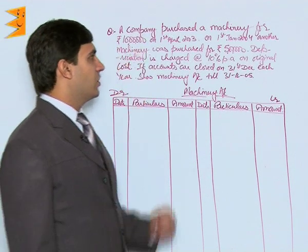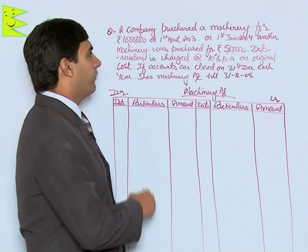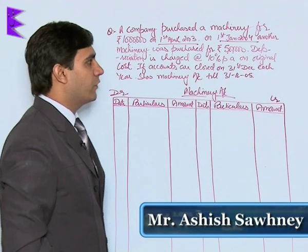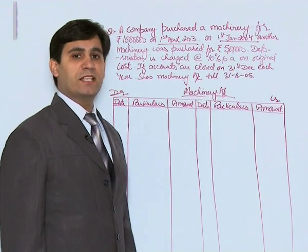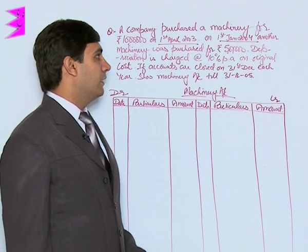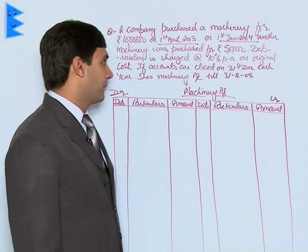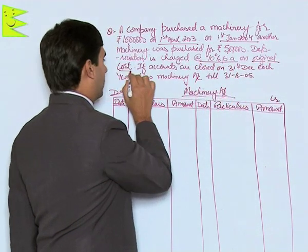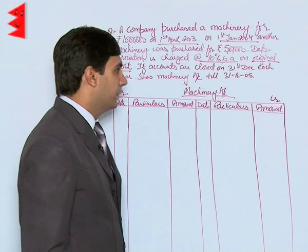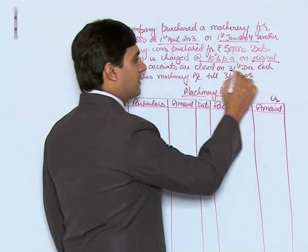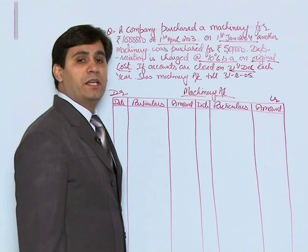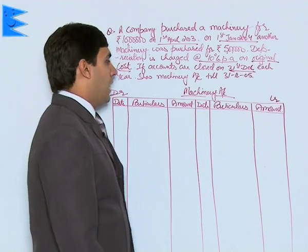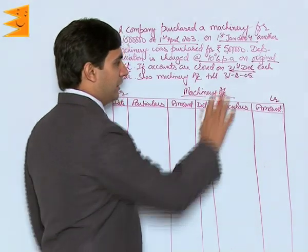A company purchased machinery for rupees 10 lakh on 1st April 2003, and on 1st January 2004 another machine was purchased for rupees 5 lakh. We are required to prepare a machinery account. Depreciation is charged at 10% on original cost, meaning the straight-line method. Accounts are closed on 31st December each year, so the financial year runs from 1st January to 31st December. We need to show the machinery account till 31st December 2005.